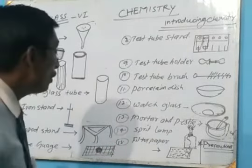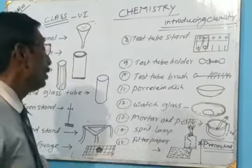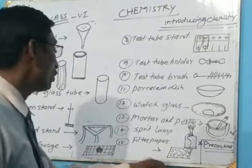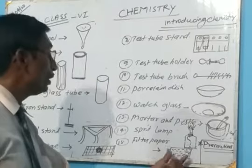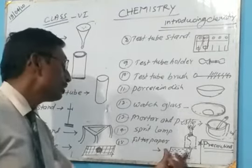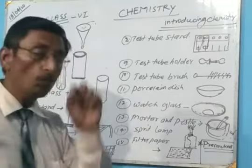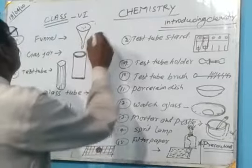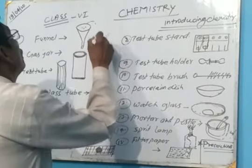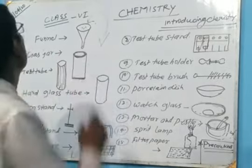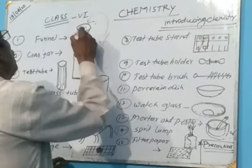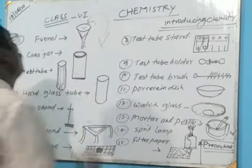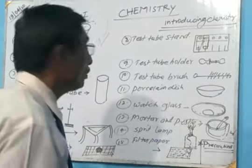Among the apparatus, number 15 is filter paper. Filter paper is not really an apparatus, but it is helpful in filtering substances. So it is necessary to know about it also. It is made of medical paper and has tiny holes. When we fold it into a conical system and place it, the filtration is very easy and it does not break. By the help of this, we can separate two substances.